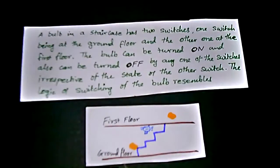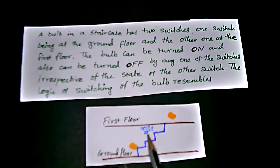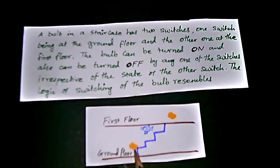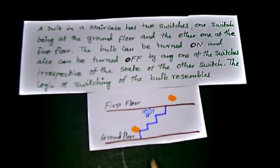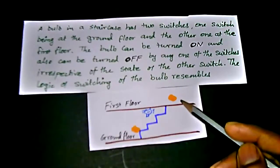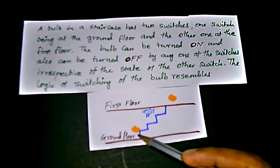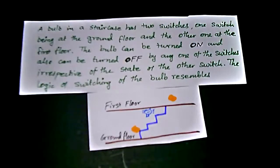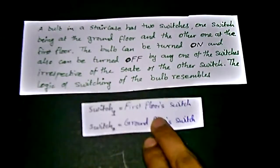So this is the chart. The problem shows two floors: in the staircase we have a bulb, on the first floor we have one switch, and on the second floor we have another switch, denoted in the orange color marker. If we change the first floor switch, the bulb turns on. If we change the ground floor switch, it also turns on. We need to find what kind of logic this represents.